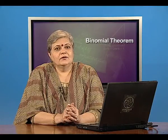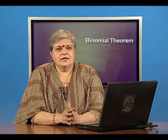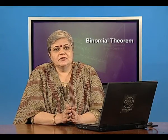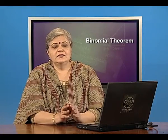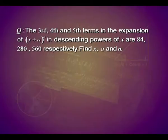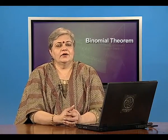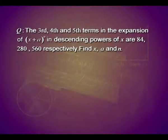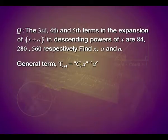So we looked at a problem depending on the expansion of 1 plus x to the power n. We have another very special problem, which is also in your NCERT textbooks. The third, fourth, and fifth terms in the expansion of x plus a whole to the power n in descending powers of x are 84, 280, and 560 respectively. You have to find x, a, and n. Now we are not talking about 1 plus x to the power n; we are talking about x plus a to the power n, and the expansion has to be in the descending powers of x, so x is taken as the first term and a as the second term.